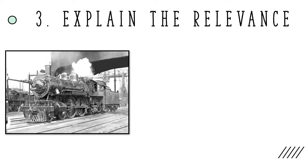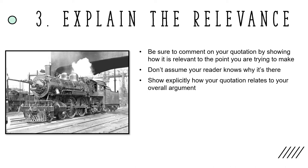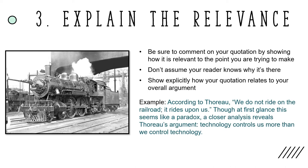Now that we've covered how to logically integrate a quotation into your writing, we can move on to the third step: explain the relevance of the quotation. Be sure to comment on your quotation by showing how it is relevant to the point you're trying to make. When you drop a quotation into your essay without an explanation, you assume that your reader knows why it's there, which is often not the case. Instead, show explicitly how your quotation relates to your overall argument. For example: "According to Thoreau, 'We do not ride on the railroad, it rides upon us.' Though at first glance this seems like a paradox, a closer analysis reveals Thoreau's argument: technology controls us more than we control technology." The writer follows the quotation with a sentence that explains why it was used.